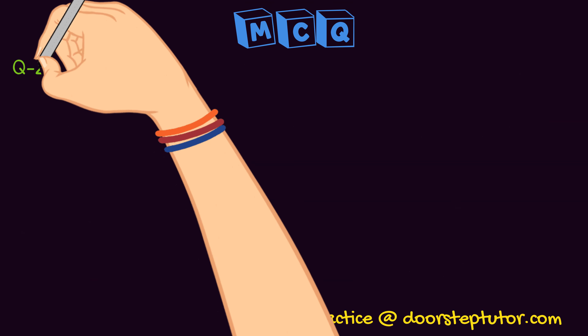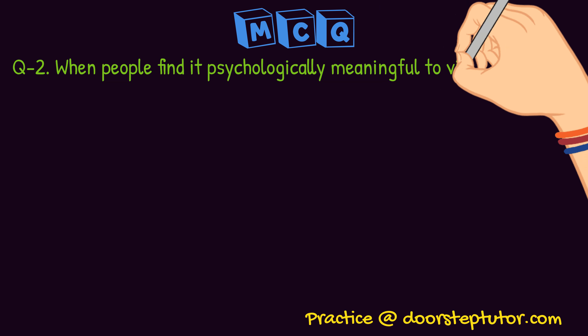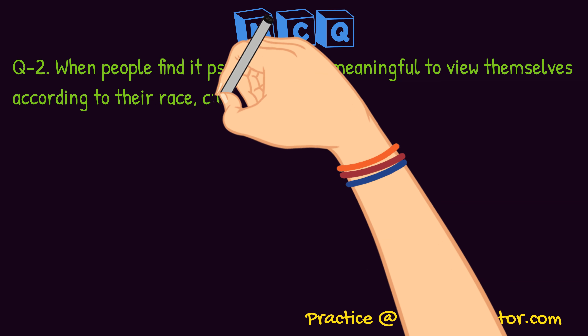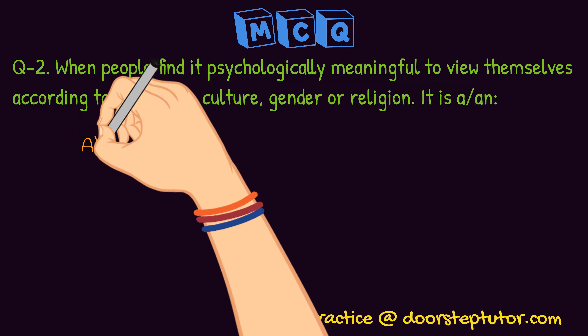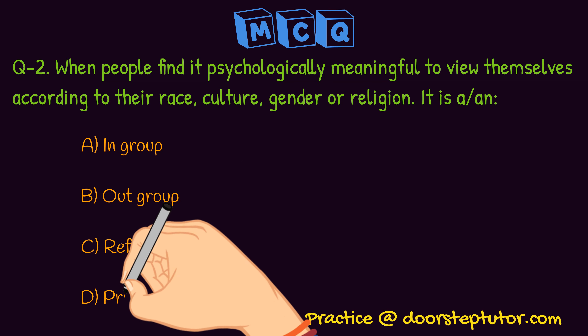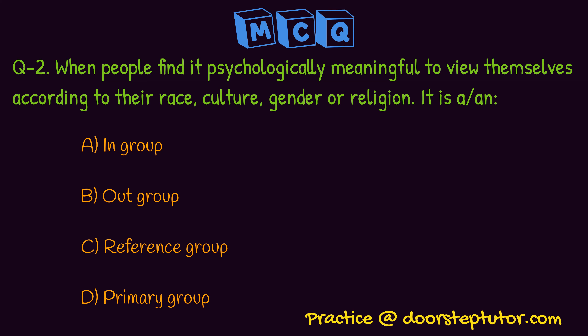Question 2: when people find it psychologically meaningful to view themselves according to their race, culture, gender, or religion, it is an — the keyword here is 'meaningful' and the grouping is on the basis of preferences. When they group themselves under their own preferences and it has meaning to them, this is an example of an in-group. It will not be an out-group because there is a feeling of belongingness; it is not a reference group because that is something we aspire to become; and primary group refers to parents and family. Therefore, the answer is option 1: in-group.